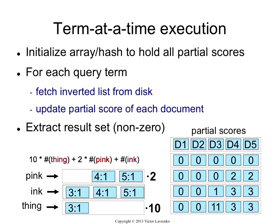Once I'm done with this, I'm not actually fully done. If you think about what doc-at-a-time does, it only emits the scores when they're non-zero — if the score is zero for a document, doc-at-a-time would not emit it. This approach computes the scores for all documents, so document 1 and document 2 have zero scores. As the final step, you typically have to take this array of computed scores and extract the result set — usually taking the non-zero entries, or sorting by scores in decreasing order, or taking the top five. That extraction actually costs something.